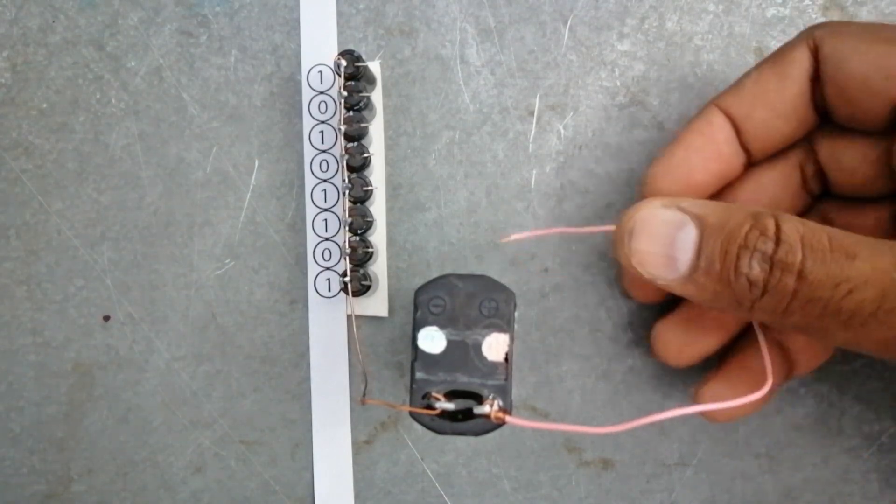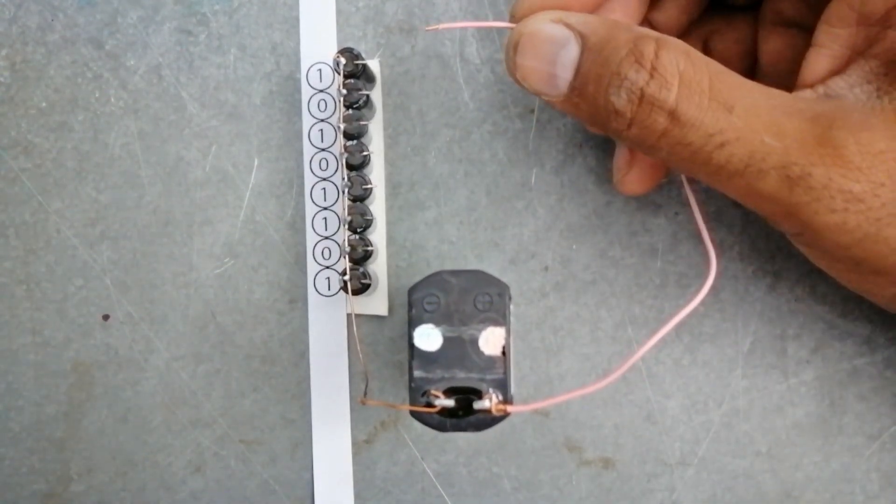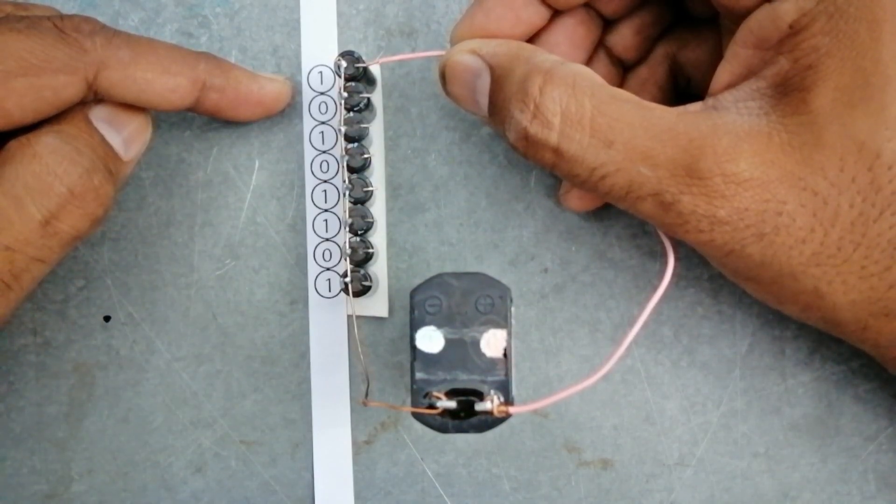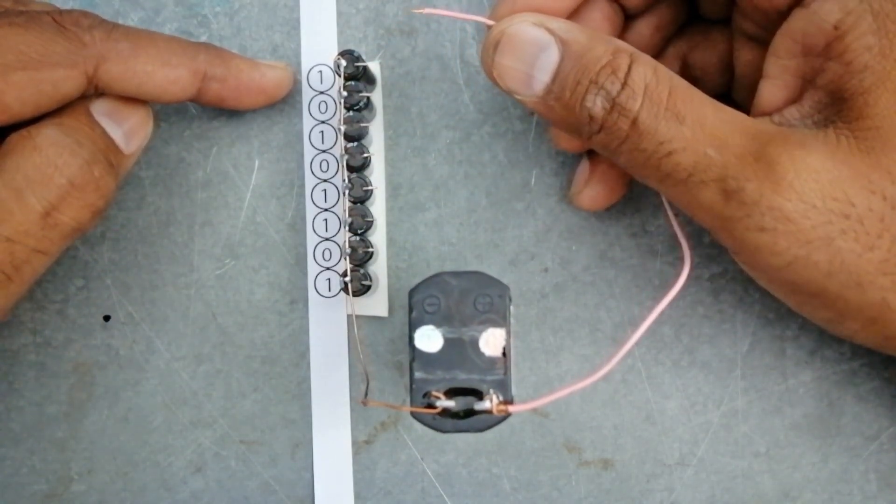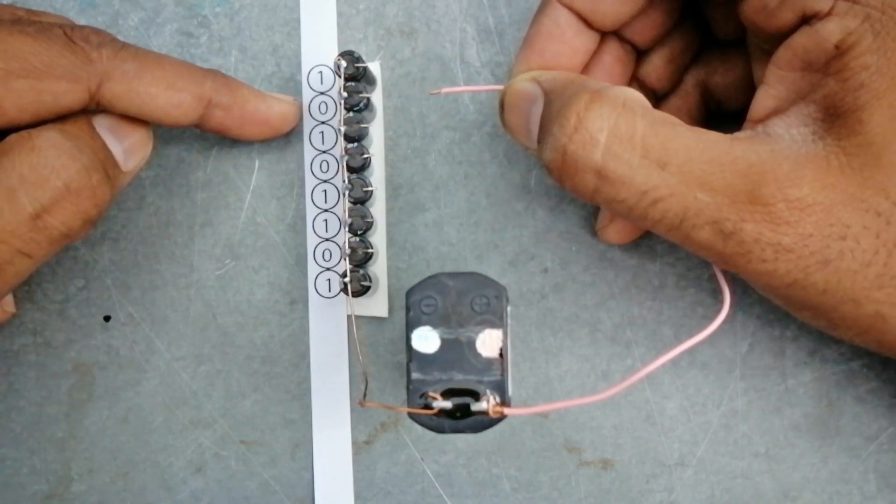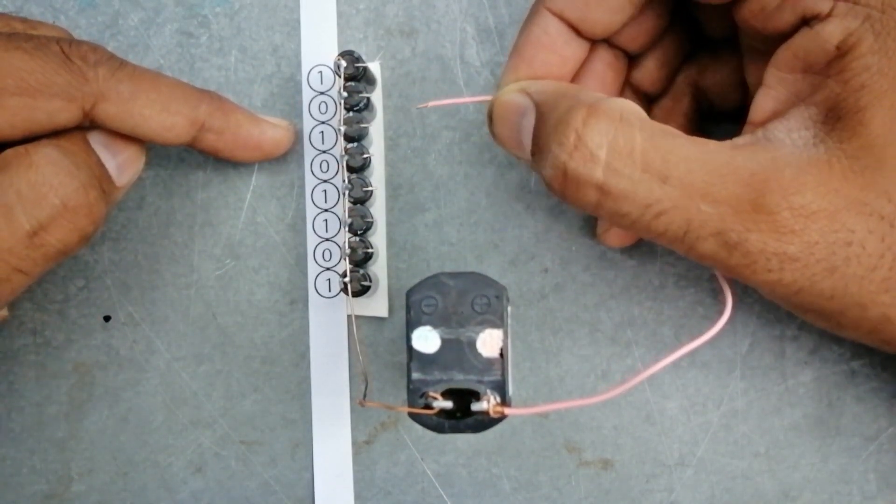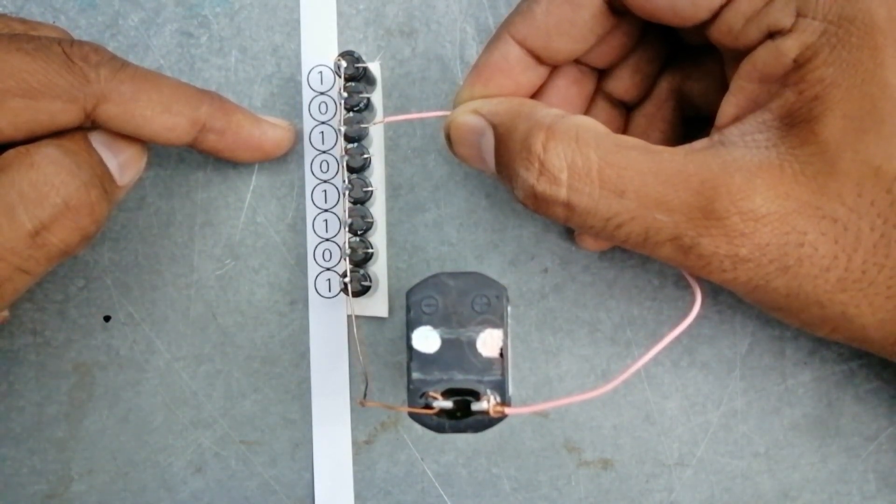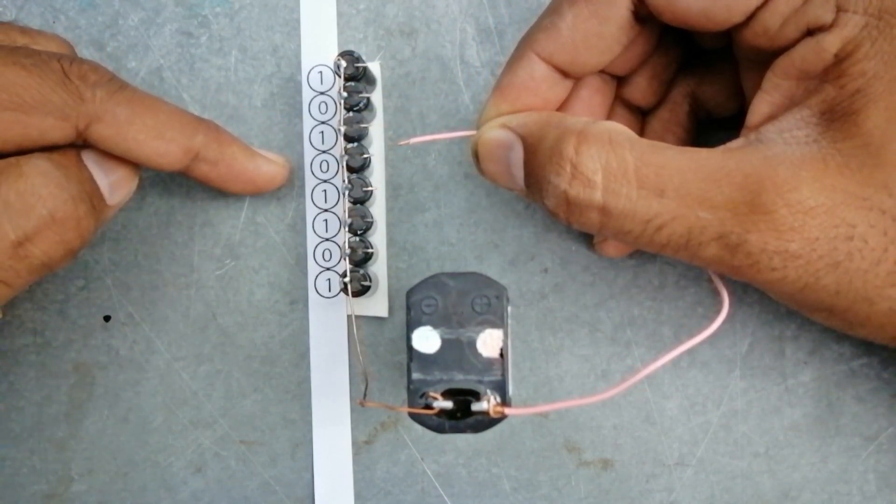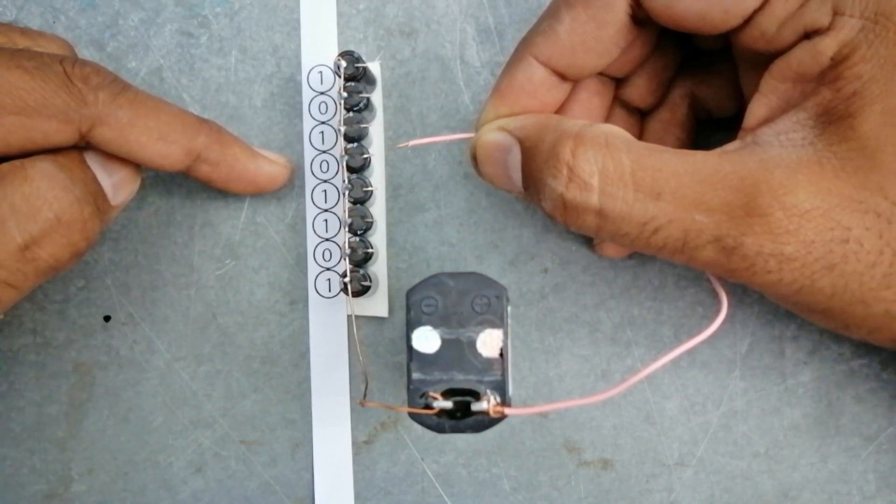The first value is one, so we will charge the first capacitor. Let's attach the wire with it. One is now stored on it. The next value is zero, so we don't charge the next capacitor. The next bit is one, so we will charge the capacitor. The next bit consists of zero, so we will not charge it.